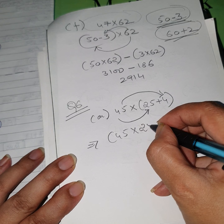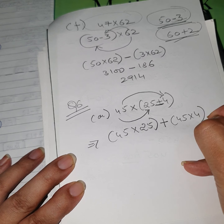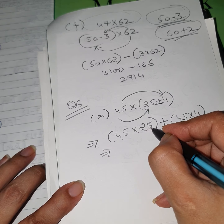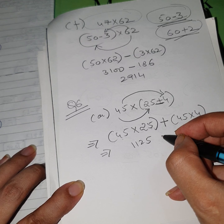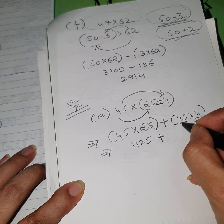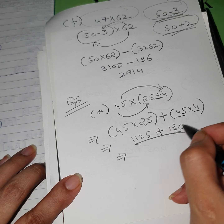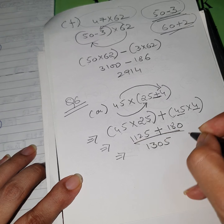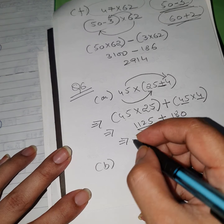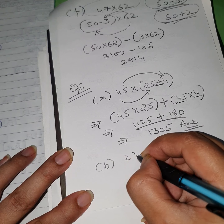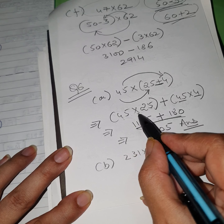Part D is 33 × 11. I am breaking 11 as 10 + 1, so we write 33 × (10 + 1). Applying the property: 33 × 10 + 33 × 1. Multiply: 33 × 10 = 330, and 33 × 1 = 33. Add them: 330 + 33 = 363. So the answer to part D is 363.